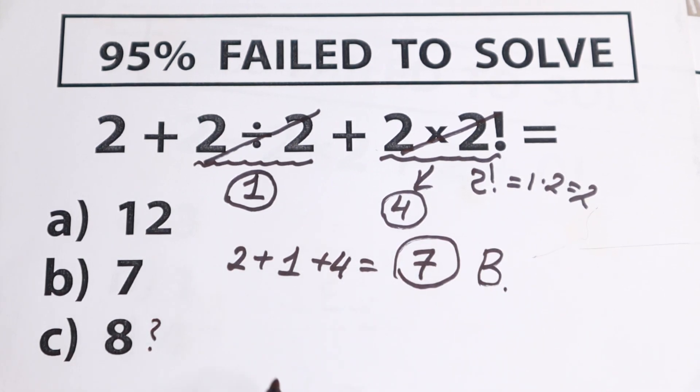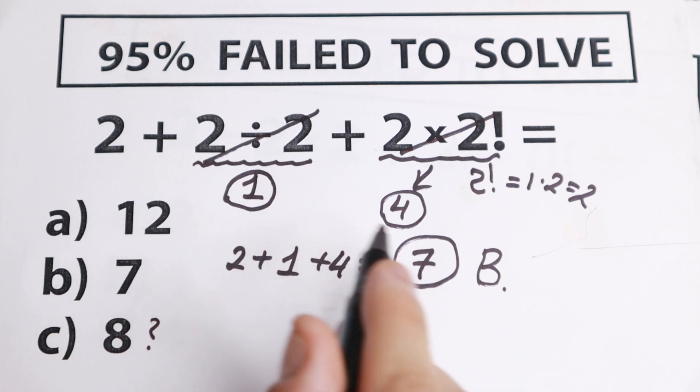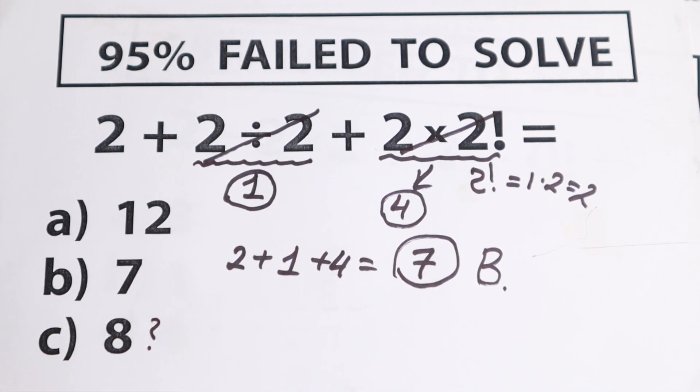And as you can see, this answer is absolutely close because we have 8, 7, but in math there is no close. We need to find a correct answer. The answer is 7. We need to find this 7, not like 7.2 or 7.1. So as you can see, a little bit difference right here, but this is the correct method. And our answer is 7, option B.